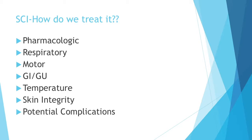For respiratory management, assess for impending failure — breathing pattern, cough, and the need for mechanical ventilation. Look for any fractures or need for surgery in the motor or sensory department. For GI and GU, look for bladder distension and retention. Temperature-wise, keep them on a cooling blanket. For skin integrity, watch for any wrinkle or breakdown that could lead to autonomic dysreflexia. And look for potential complications.